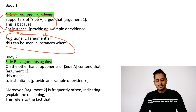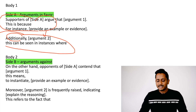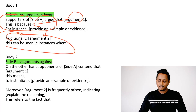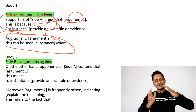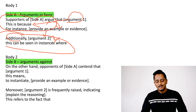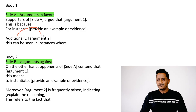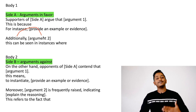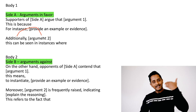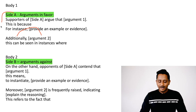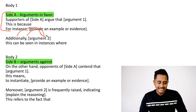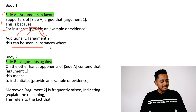The template for body one is: 'Supporters of Side A argue that...' — one main idea, then supporting idea, then example. For the second idea written with 'Additionally,' since you've already used 'this is because' above, you can go straight to the example with 'this can be seen in instances where.' If you want, you can still add 'this is due to the fact that...' before the example for the second idea.